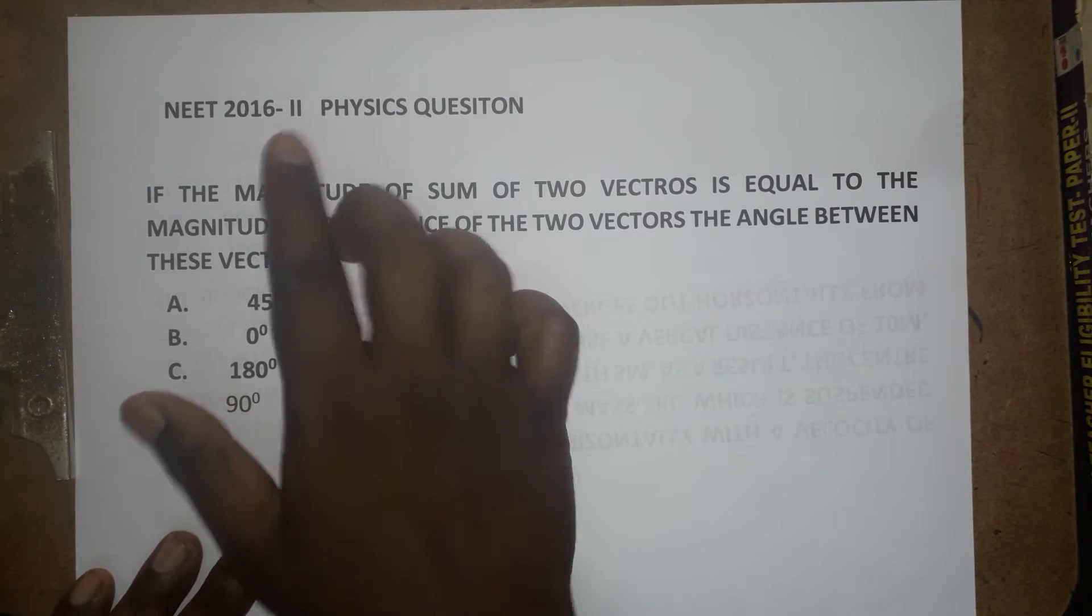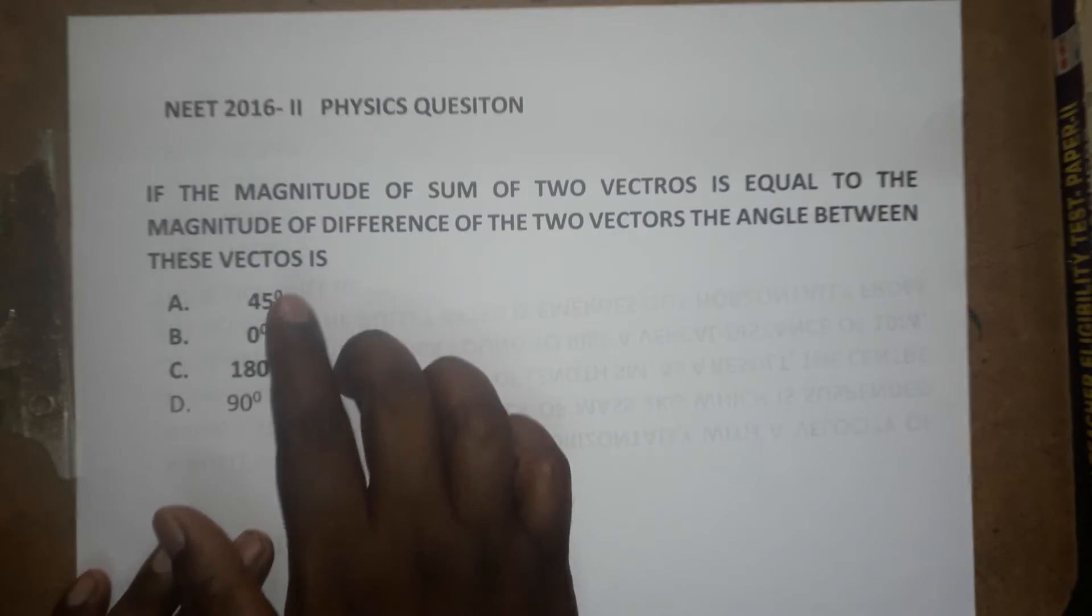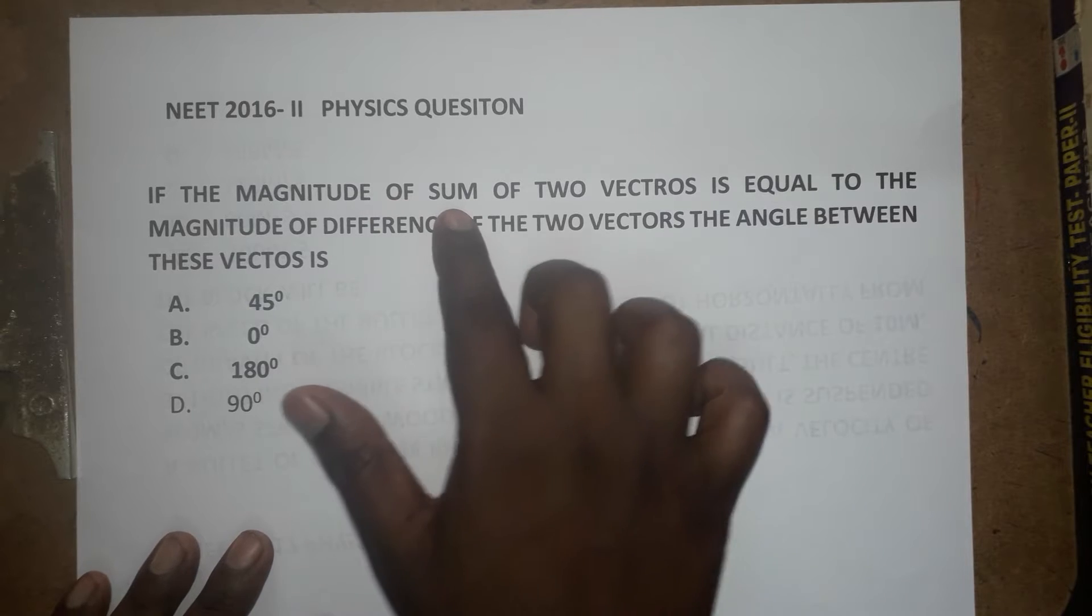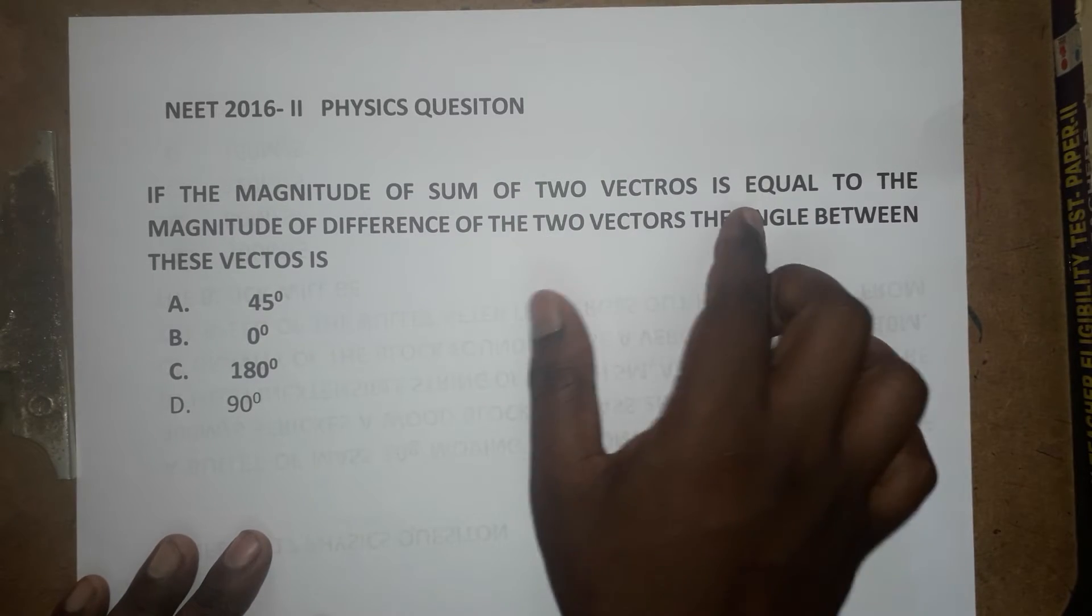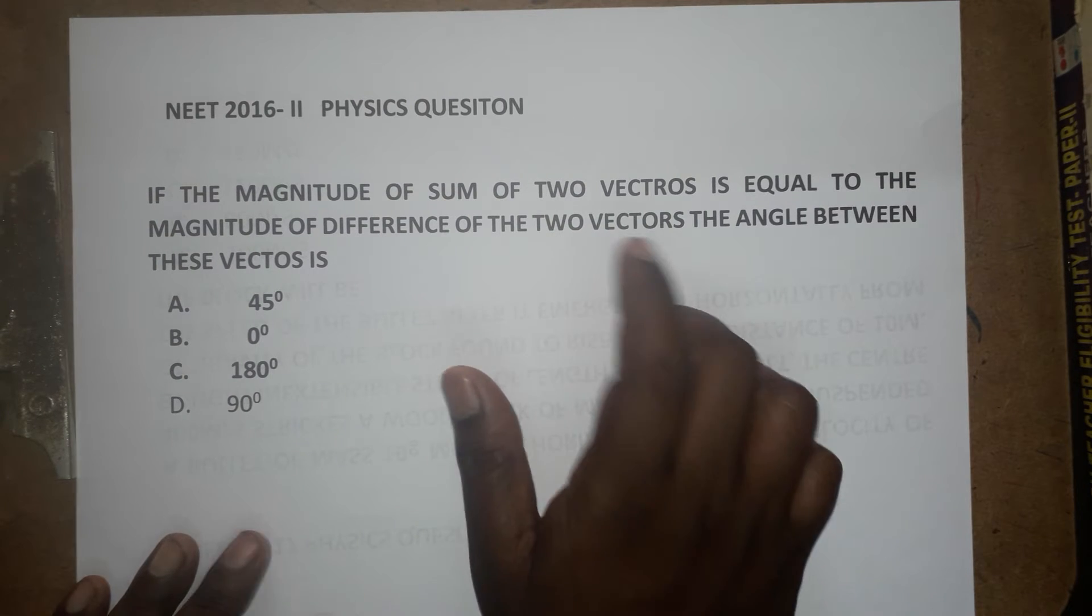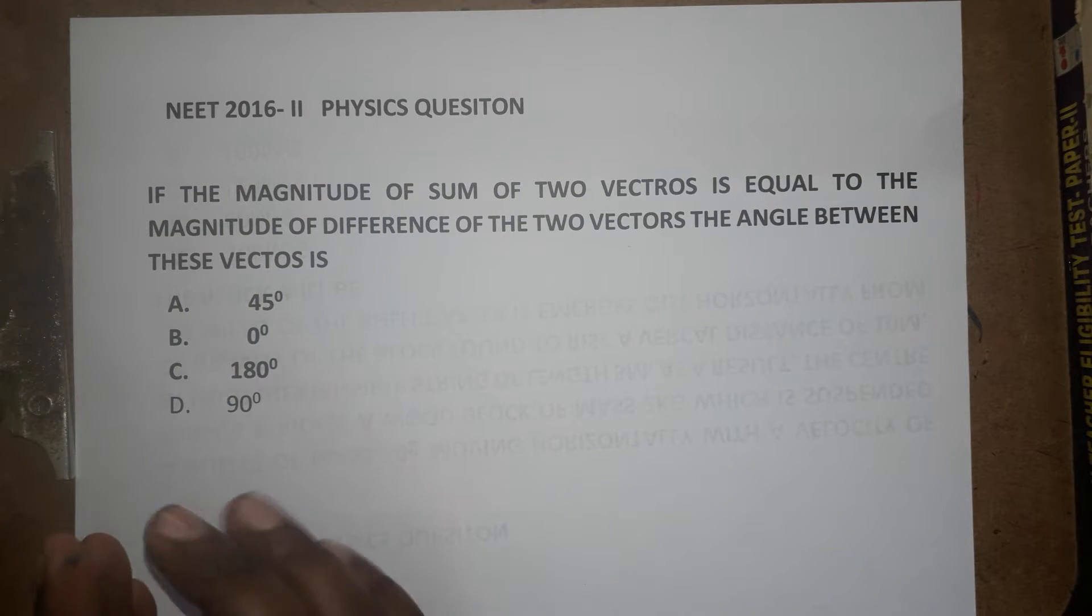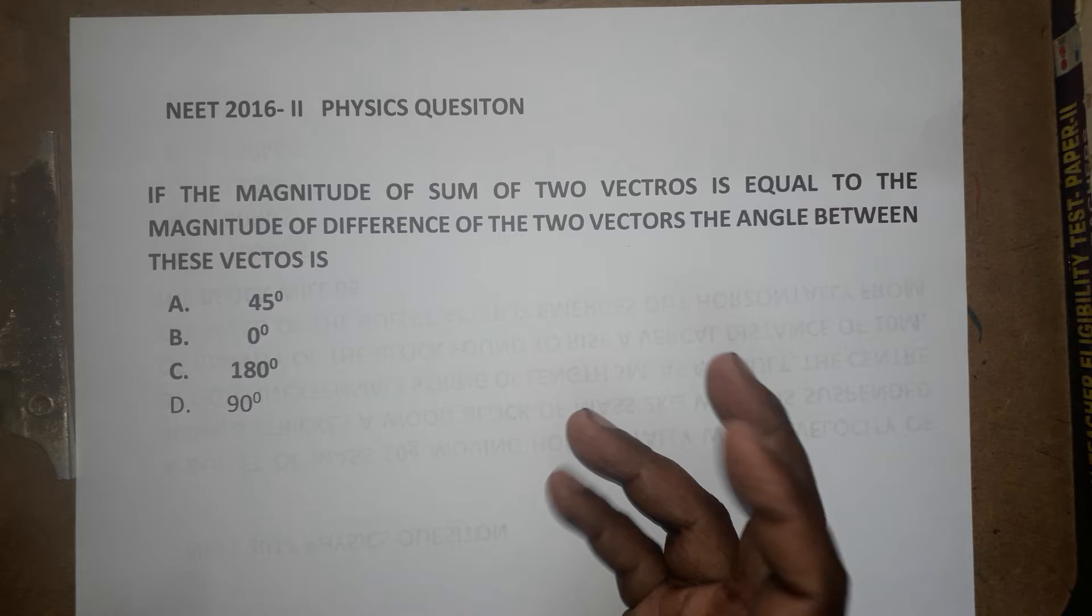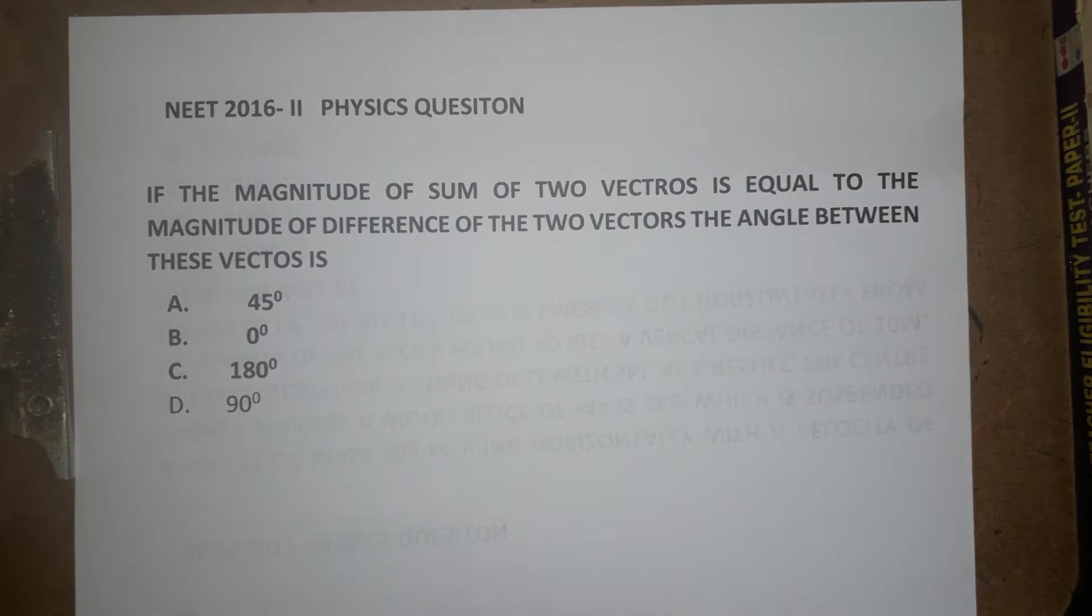Today we are going to learn a NEET 2016 Physics question. If the magnitude of the sum of two vectors is equal to the magnitude of difference of two vectors, when we add the two vectors and then when we are subtracting the two vectors, the angle between the two vectors is how much?